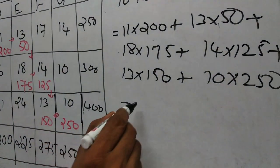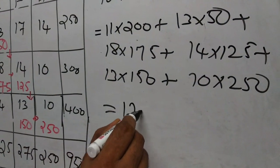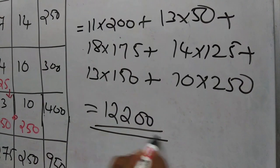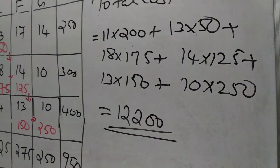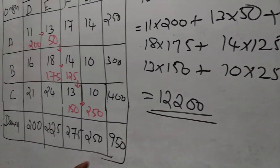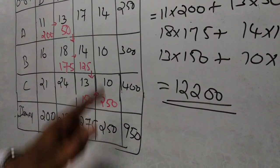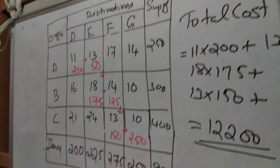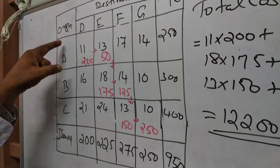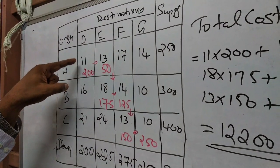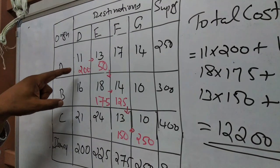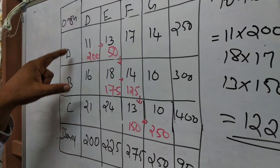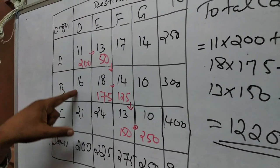The total cost equals 12,200. That is how many rupees are required to satisfy the total supply of 950 and total demand of 950 at different destinations — for example, 200 units are to be transported from S1 to D1, and so on.